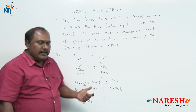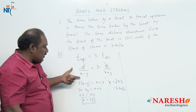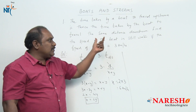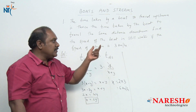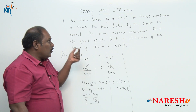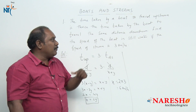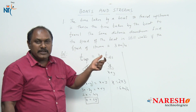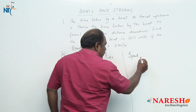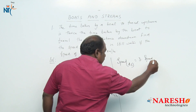This is one way to answer the question. Alternatively, we can start from the fact that distance is constant in this problem. If distance is constant, speed and time are inversely proportional. Since the time taken to travel upstream is 3 times the time taken to travel the same distance downstream, speed downstream must be 3 times speed upstream.